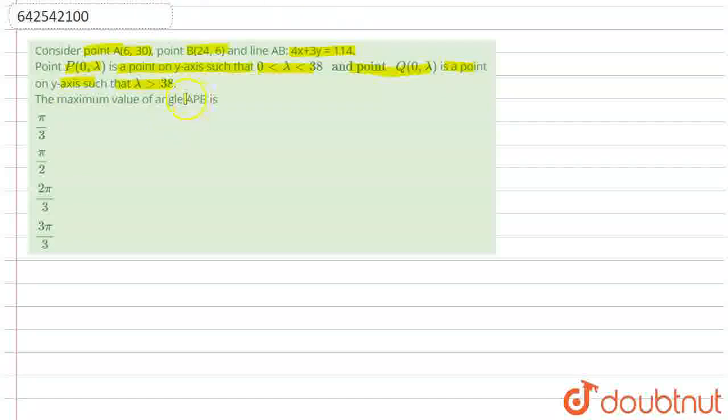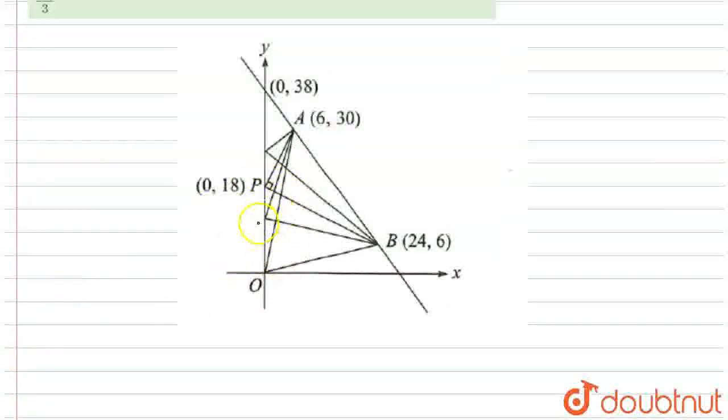So, we have to find the maximum value of angle APB. First, let's draw the graph of all these points. This is the required graph where all the points are plotted, okay?